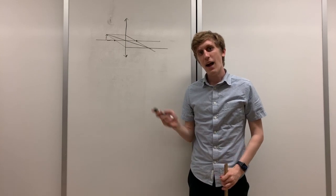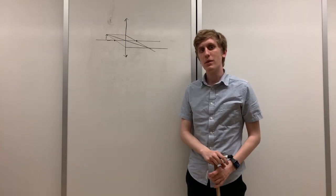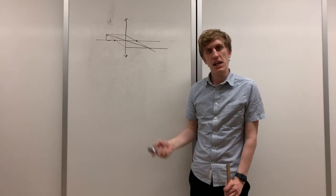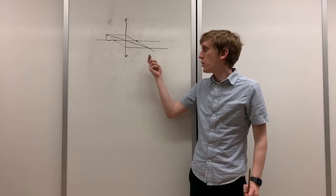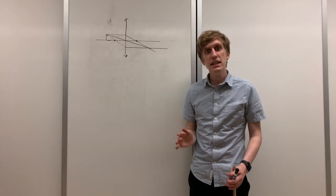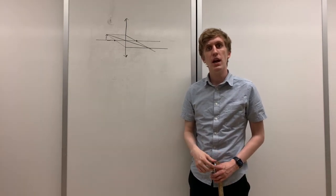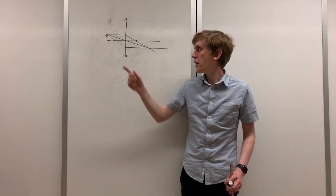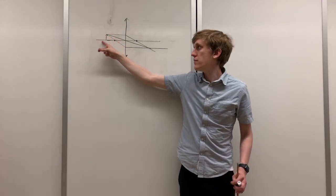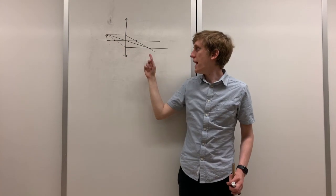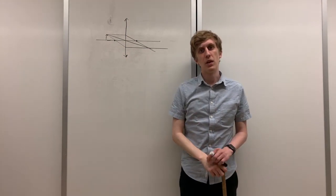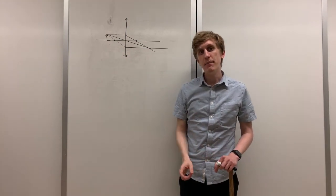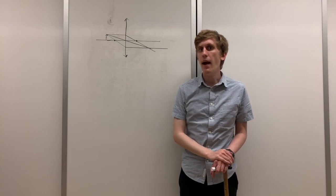Notice that there's a point on this side of the lens where all of the rays converge. This is the location that the image will be. All of these rays started above the horizontal line and ended up below that horizontal line, which means that the image is going to be flipped upside down.